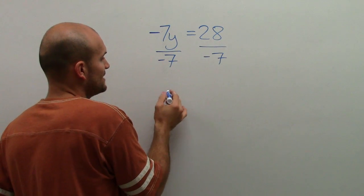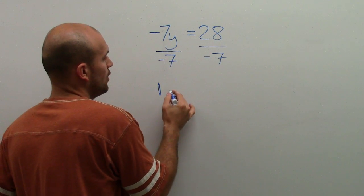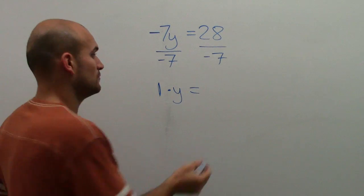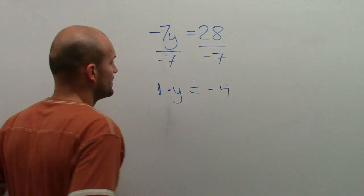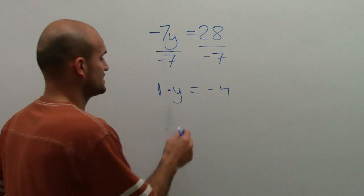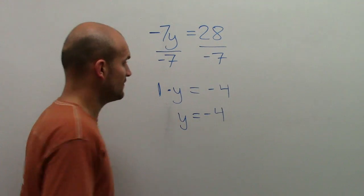-7 divided by -7 produces 1 times y, which equals 28 divided by -7, which equals -4. Now, by the multiplication property of 1, 1 times y gives me y = -4.